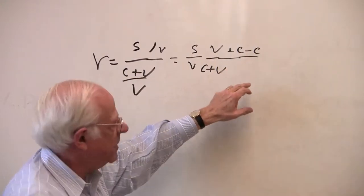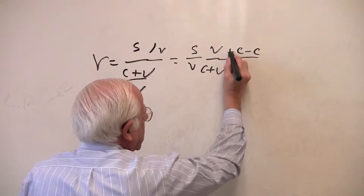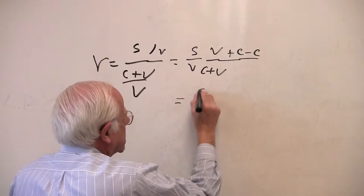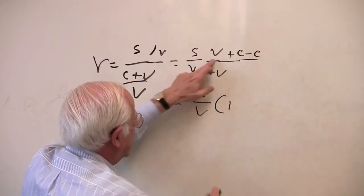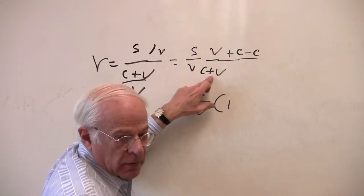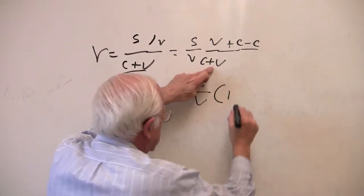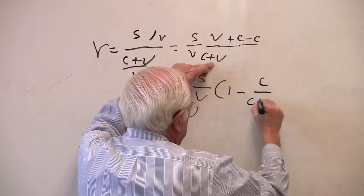So as you know from high school, c minus c is 0, but I haven't done anything. But now I'm going to rewrite this: s over v, 1, v plus c over c plus v is 1 minus c over c plus v.